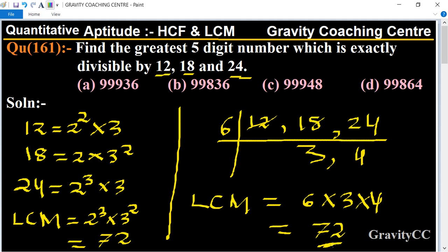Here 72 is the least number which is exactly divisible by 12, 18, and 24. So now we need to find which number multiplied by 72 will become the greatest five digit number, so we divide.